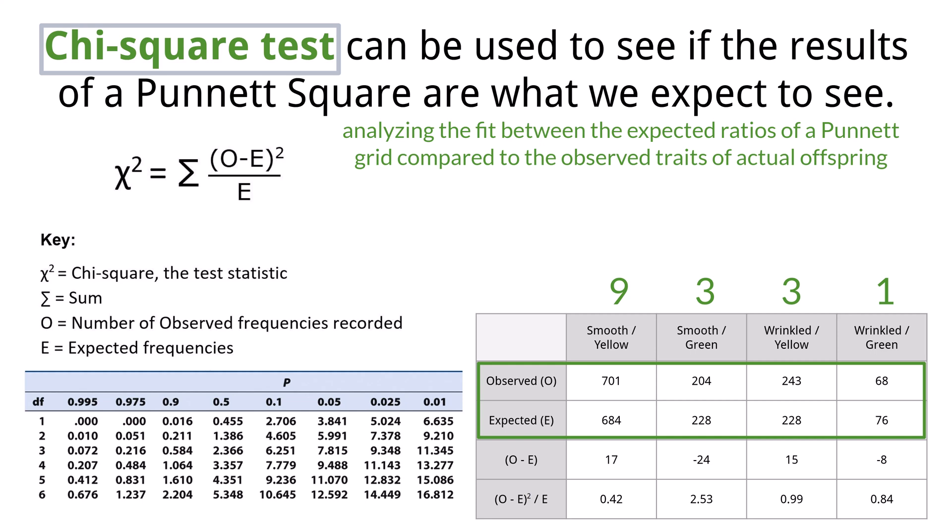Following the formula, you document what you observe, the first row of the table. You calculate the expected and place those values in the second row. The next step is to subtract the expected from the observed and square that number. The reason you square it is to get rid of the negative numbers. You then divide by the expected. The last row shows the answers. Adding those numbers will give you your chi.